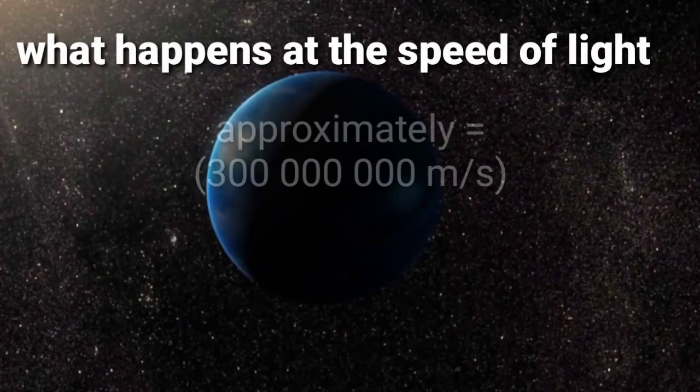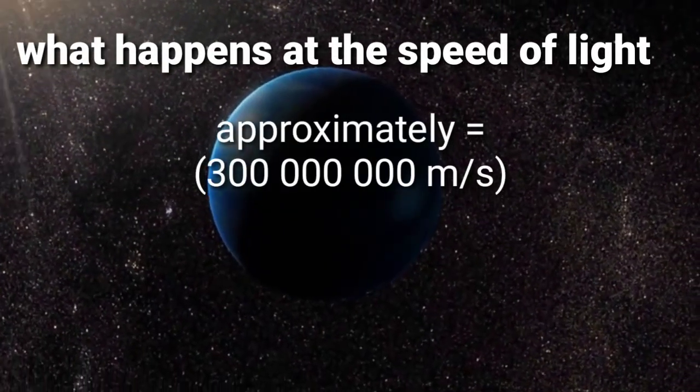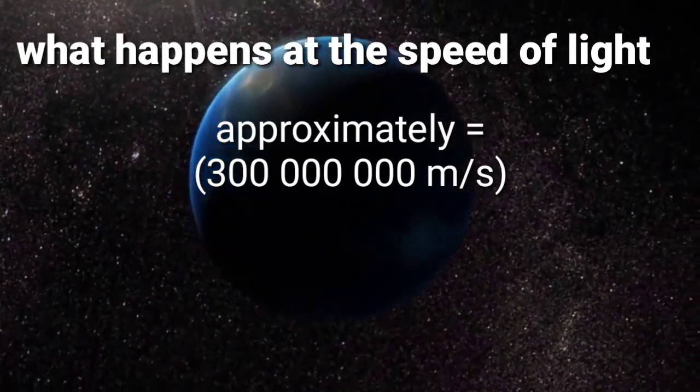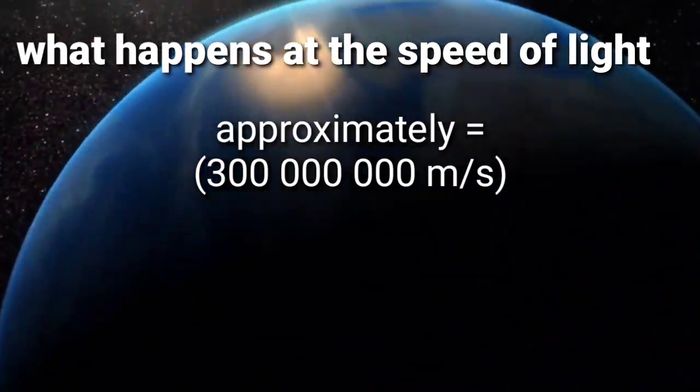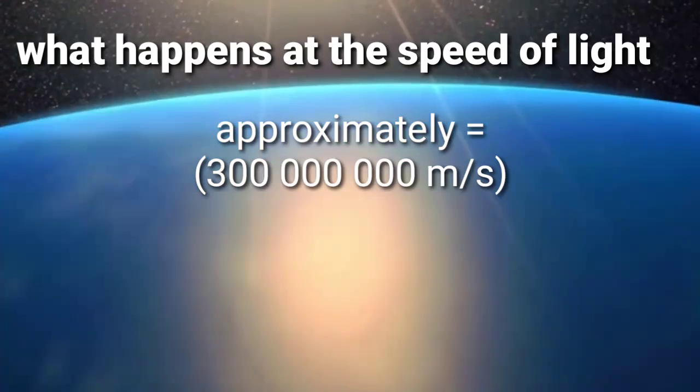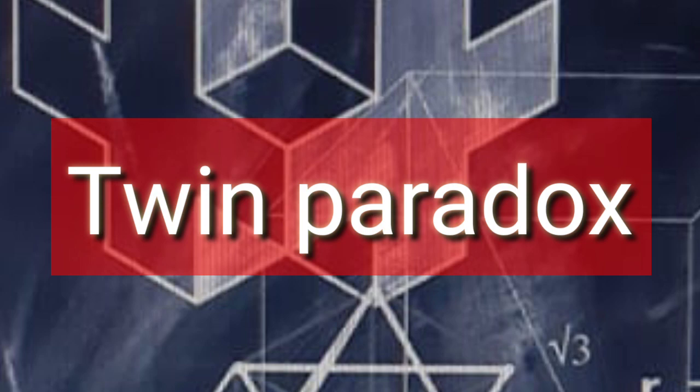In this video, we will see what happens when we travel at the speed of light, that means approximately 300 million meters per second. And we can understand this by a really famous paradox known as the Twin Paradox.